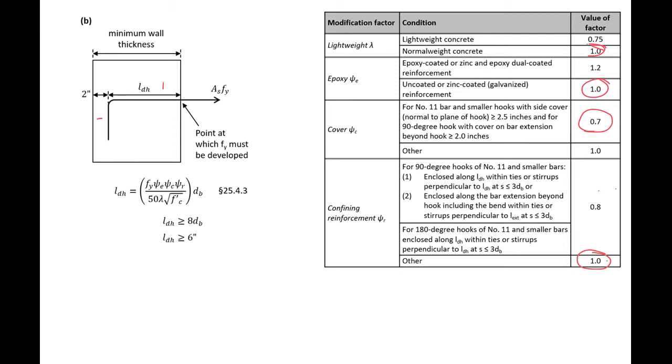We're now ready to plug all of our values into our ACI expressions. So our LDH is going to be equal to 60,000 PSI times 1.0 times 0.7 times 1.0, and then all divided by 50 times 1.0 times the square root of 4,000 PSI, and then all of this times our bar diameter, 1.41 inches.